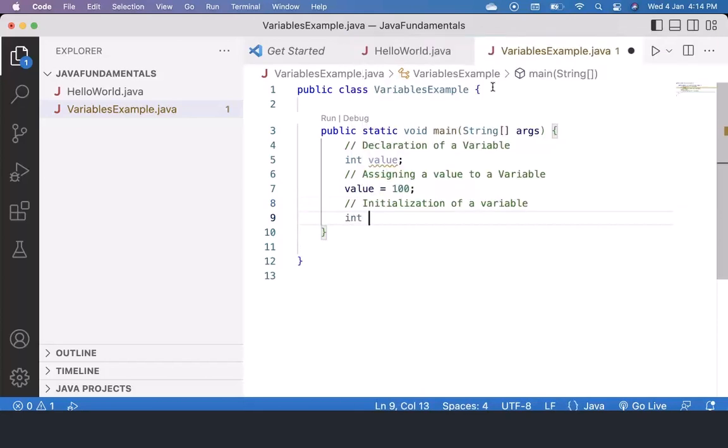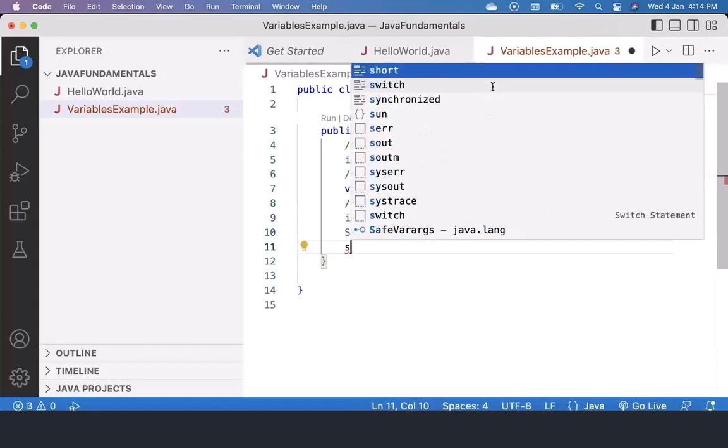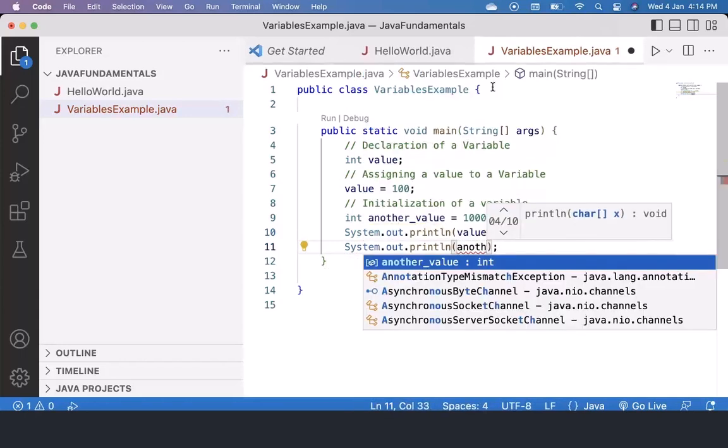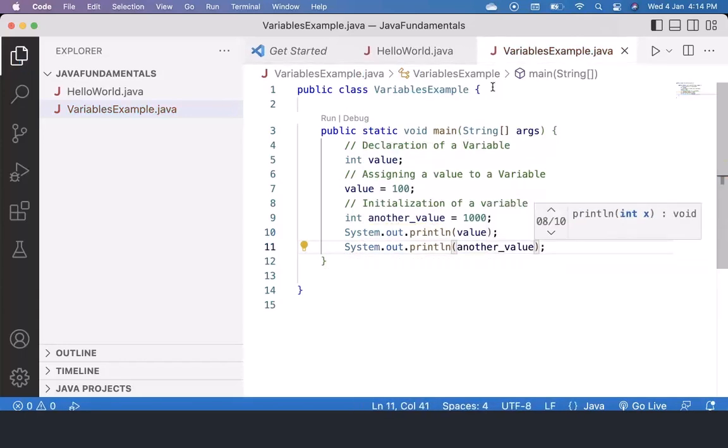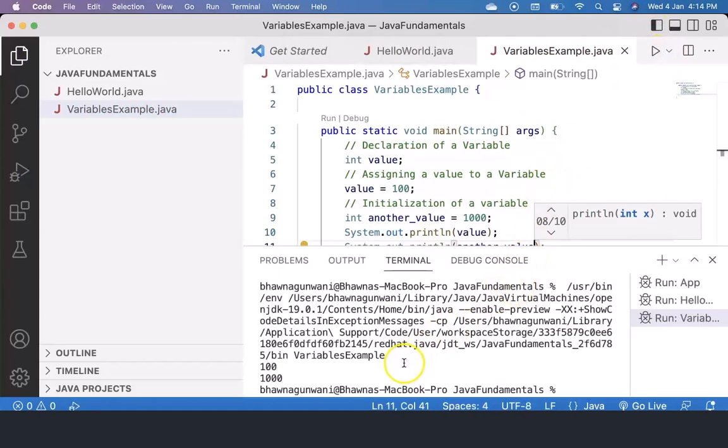That is integer. Let's say I'm naming this variable this time as anotherValue equals to 1000. Let's try to print out the value and anotherValue. As you know, we just need to run this program to see the output. That is 100 and 1000.